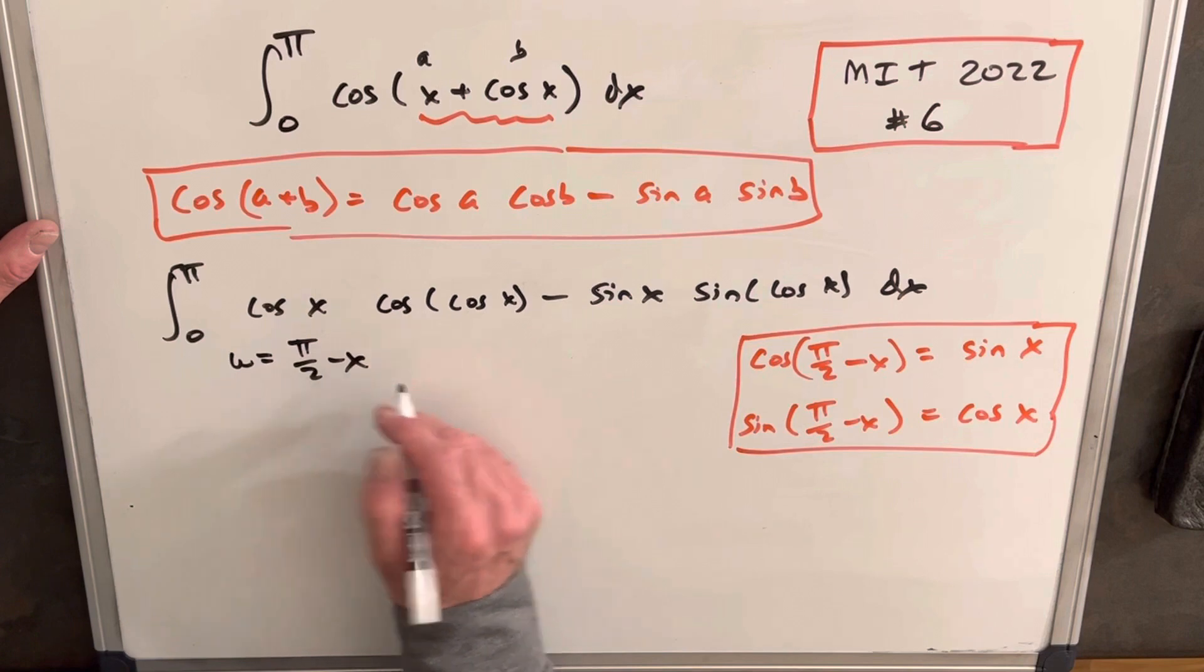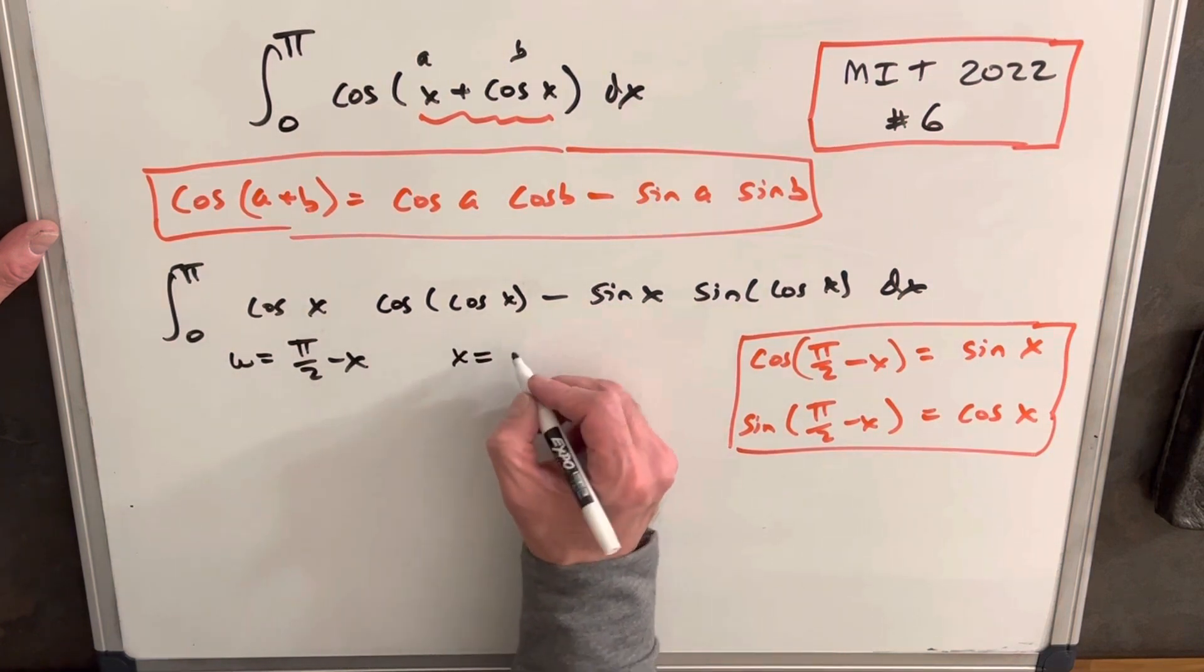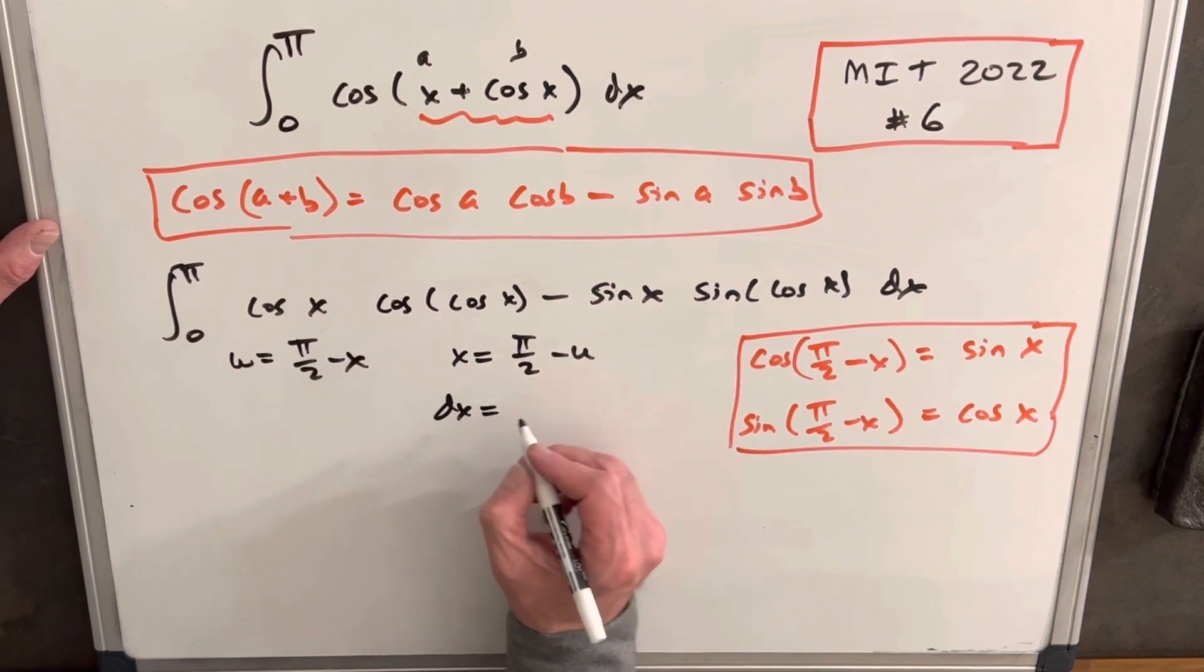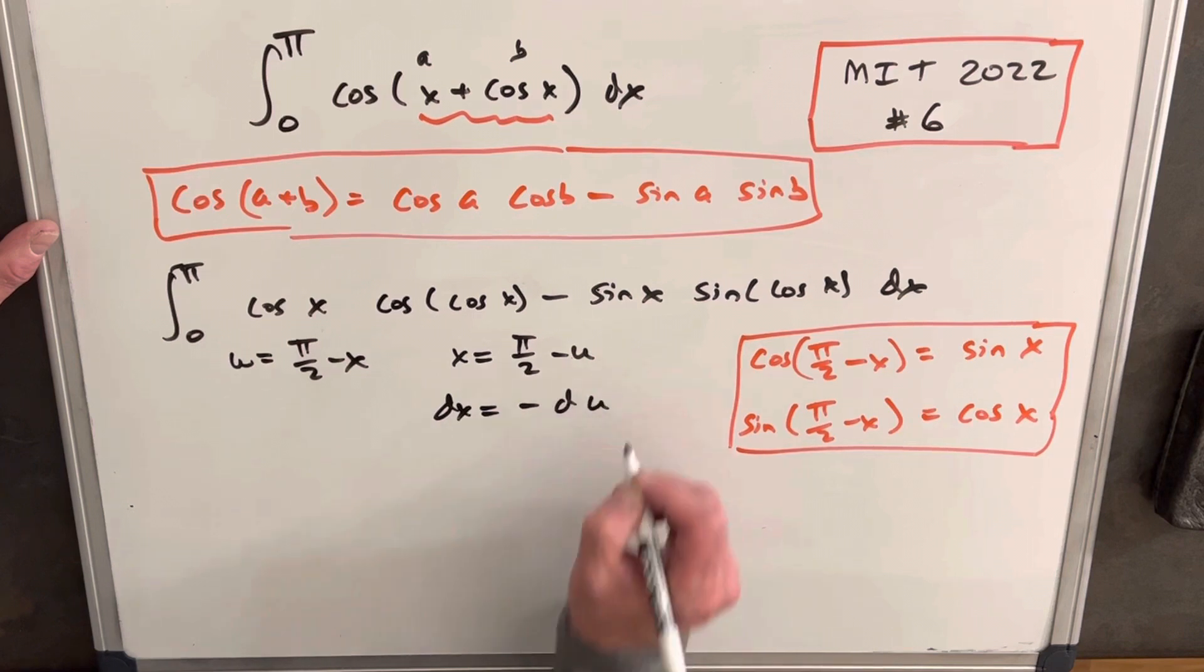Actually, before we do that, let's also notice we could have, we can also say from this same expression, just rearranging x equals pi over 2 minus u. And then we can get our dx, and that will be equal to minus du.